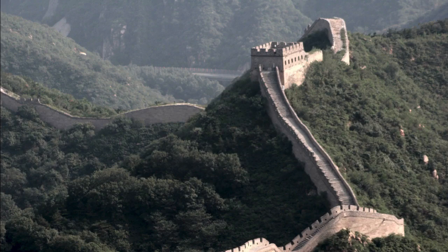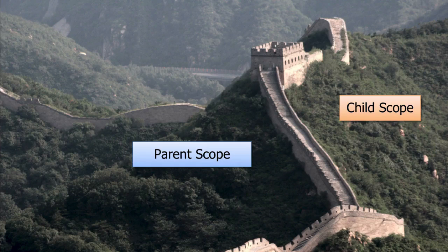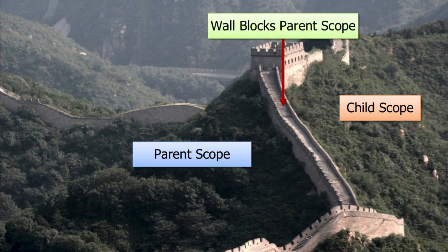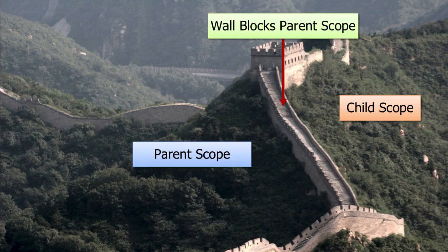Another way to think of isolate scope: the parent scope and the child or isolate scope live in different areas, blocked by a wall you can't climb over. The problem is how do you get data from the parent scope to the child scope and back? That's where isolate scope properties come in — we punch holes in the wall, building pipes through it, so we can still pass data between the parent and isolate scope.